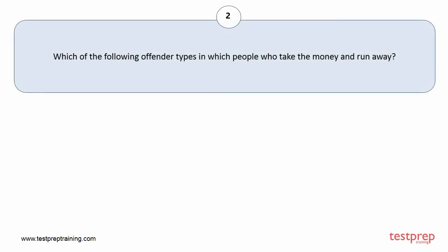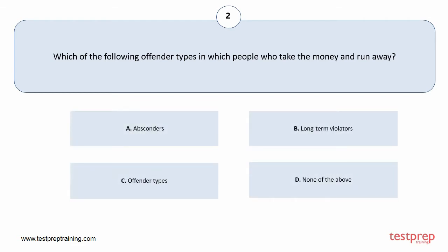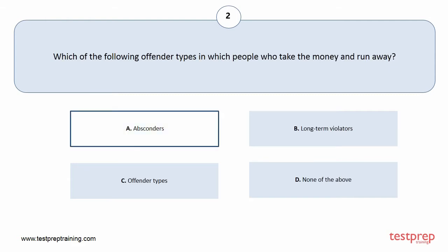Question number 2. Which of the following offender types describes people who take the money and run away? Your options are A. Absconders, B. Long-term Violators, C. Offender Types, D. None of the above. The correct answer is option A.